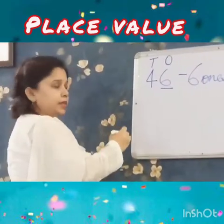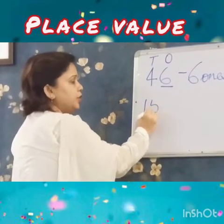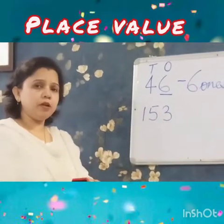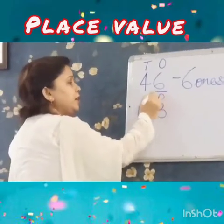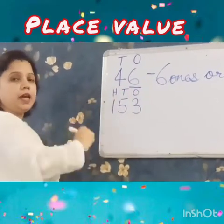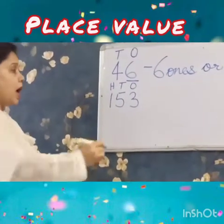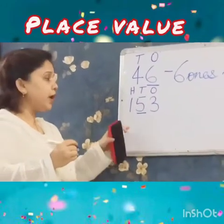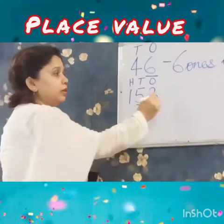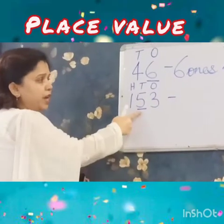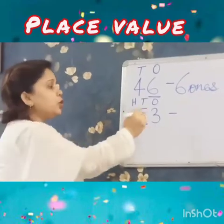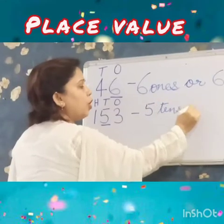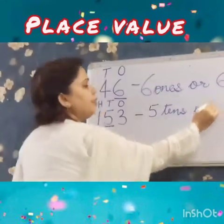Let us take another example. A 3 digit number: 153. I will write 3 places above the number: O, T, H. Here I have underlined 5, so we have to write the place value of 5. Now see here children — 5 is in the place of 10's, so the place value of 5 is 5 10's.